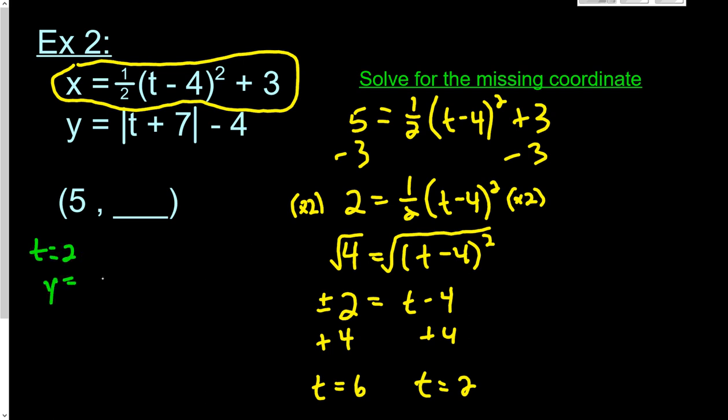We've got y equals absolute value of 2 plus 7 minus 4. And so absolute value of 2 plus 7, that's 9. 9 minus 4 is 5. So one of the points when x is 5 is 5 comma 5.